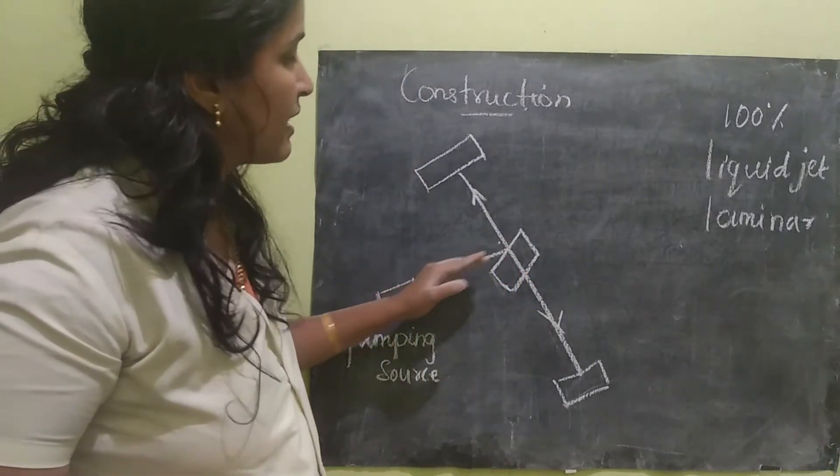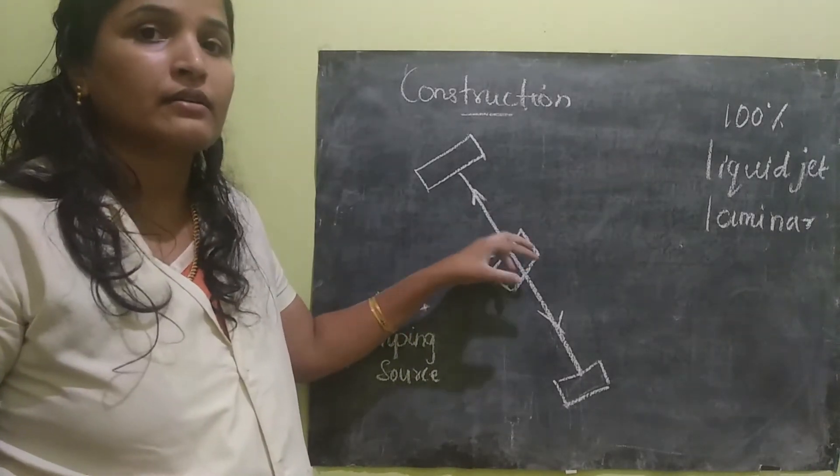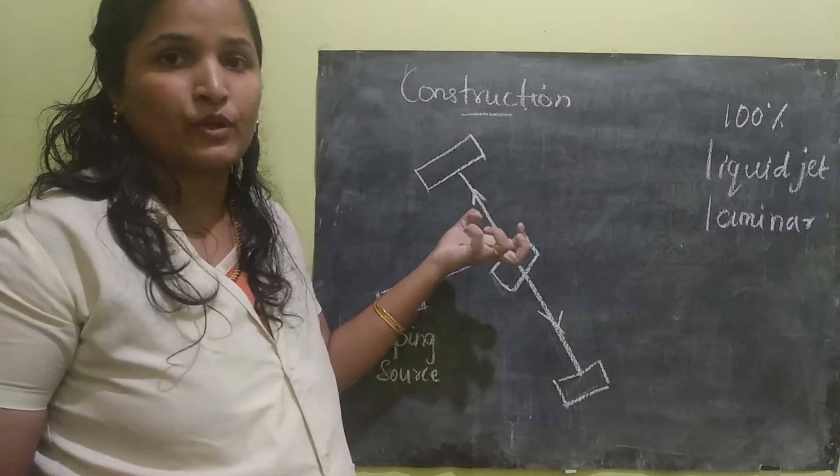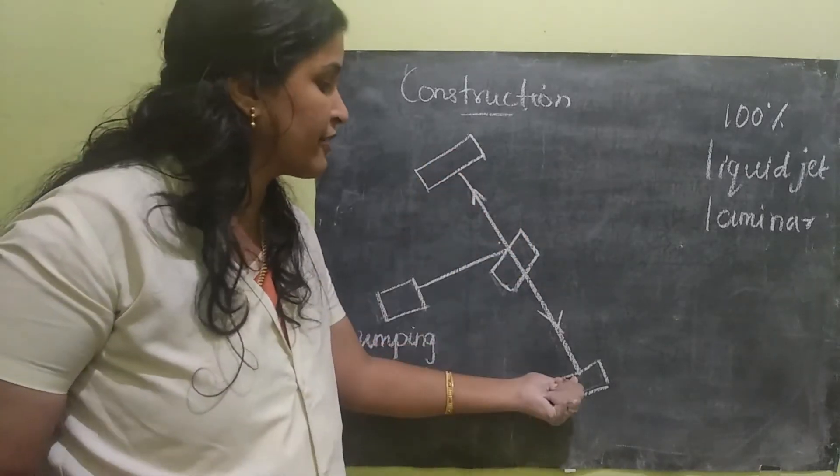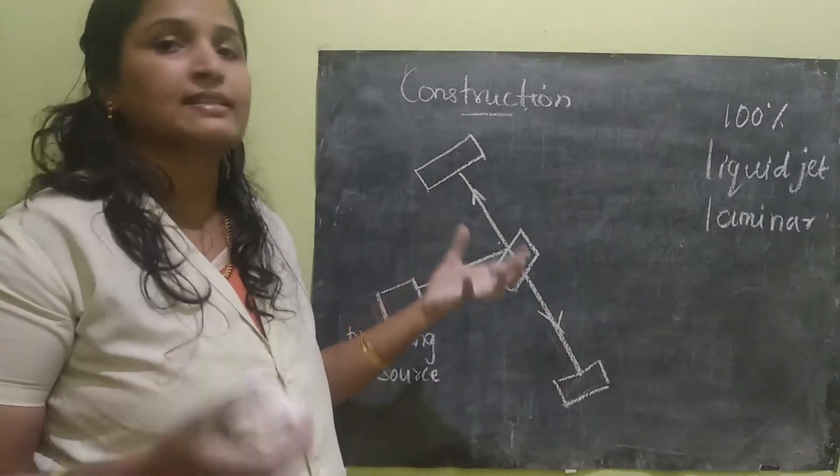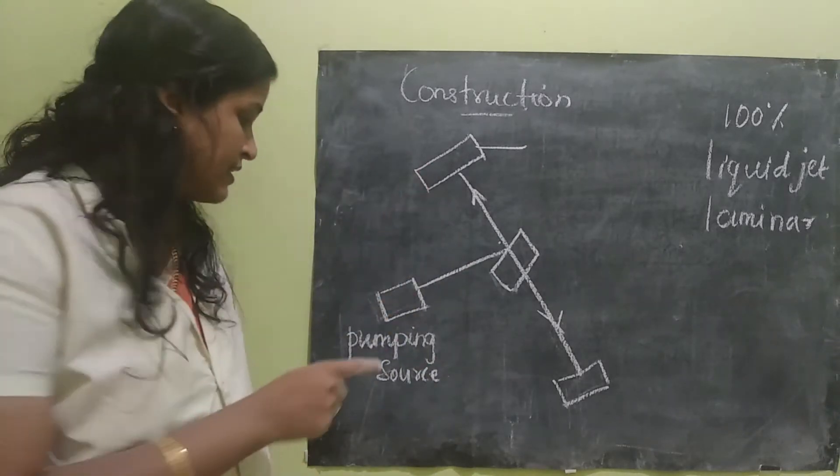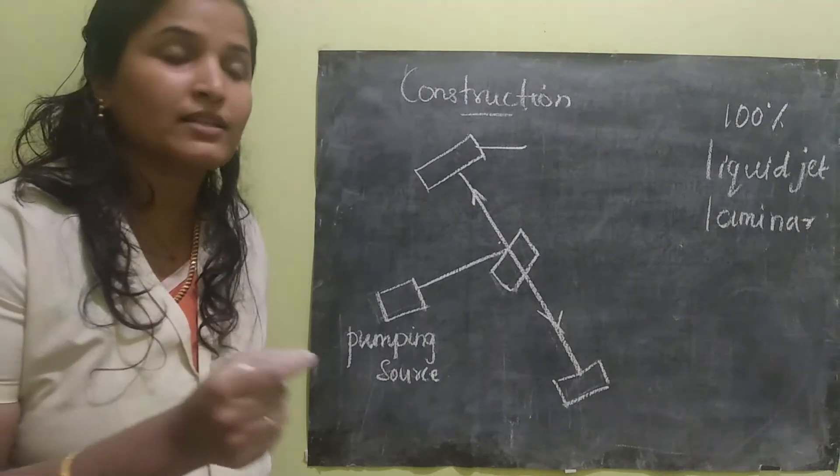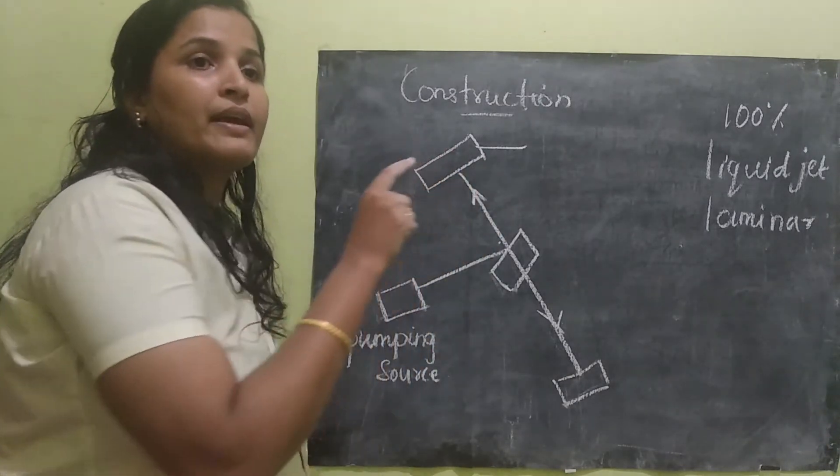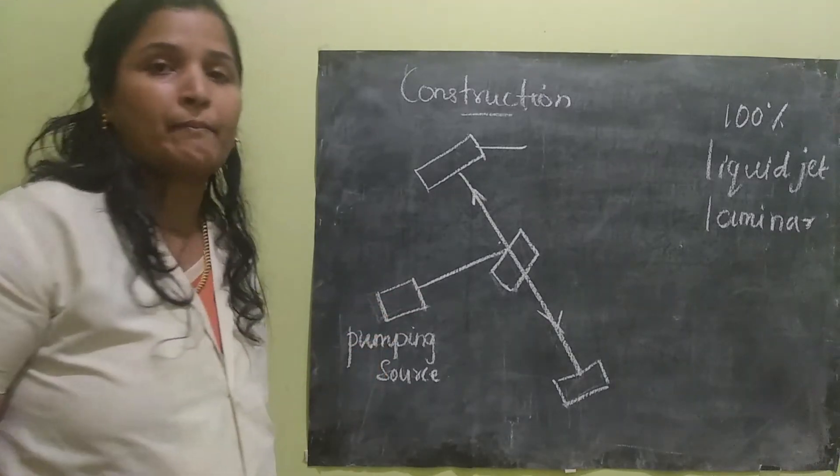Once the pumping source reaches the dye, the atoms in the dye will be excited. It will be excited and reflected by using these two mirrors. Finally, the laser light will be emitted from this mirror. One more thing we have to notice: the pumping source will have a particular wavelength, but the laser that is coming out of this mirror will have a wavelength which will be very high when compared to the pumping source.